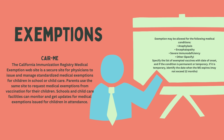Exemptions are done using CAIR ME, the California Immunization Registry Medical Exemption website — a secure site for physicians to issue and manage standardized medical exemptions for children in school or child care. Parents use the same site to request medical exemptions, and schools and child care facilities can monitor and get updates for exemptions. Exemptions may be allowed for conditions including anaphylaxis, encephalopathy, severe immunodeficiency, or another condition specified by the physician. The list must include exempted vaccines with date of onset and whether the condition is permanent or temporary; if temporary, the physician must identify the expiration date.